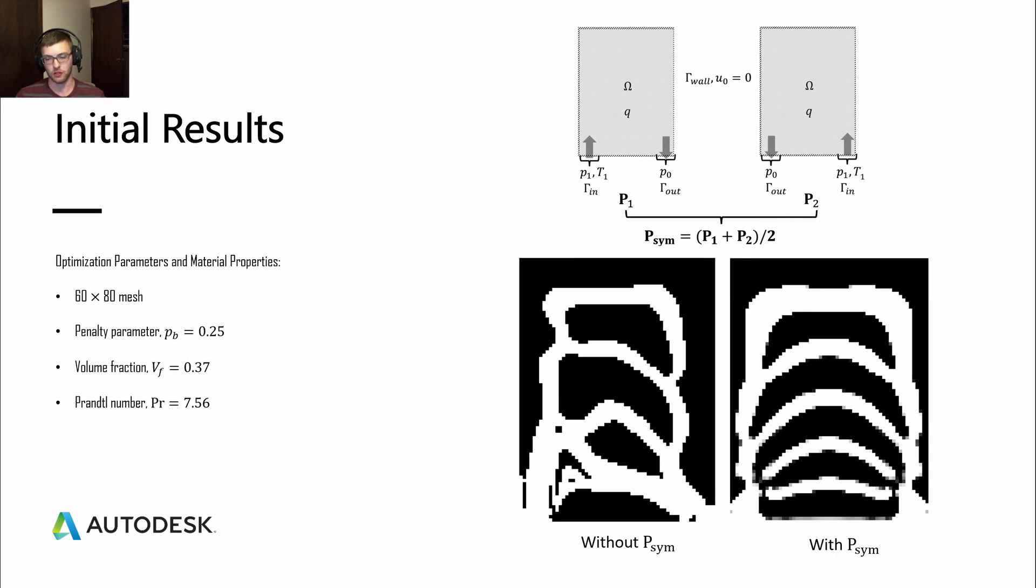One problem with this design though, is we have these blocked flow channels here. You can see them over here. We also have unequal flow throughout this entire design. We have different flow rates that go through these channels. So we're looking at how we can address that and further optimize the design.